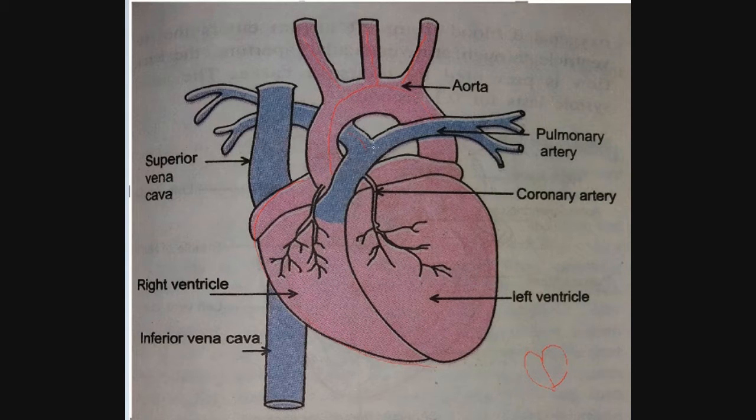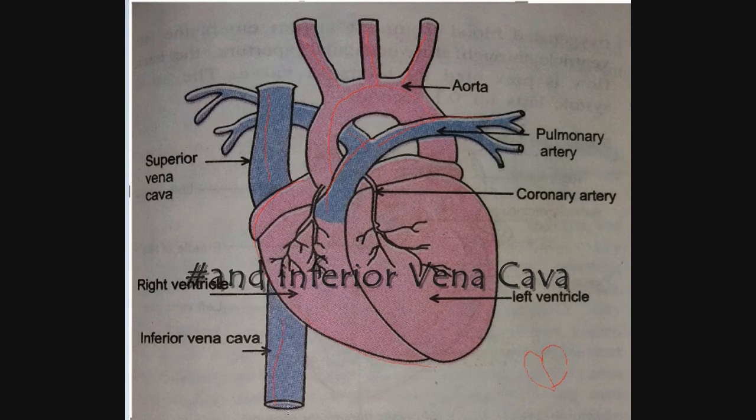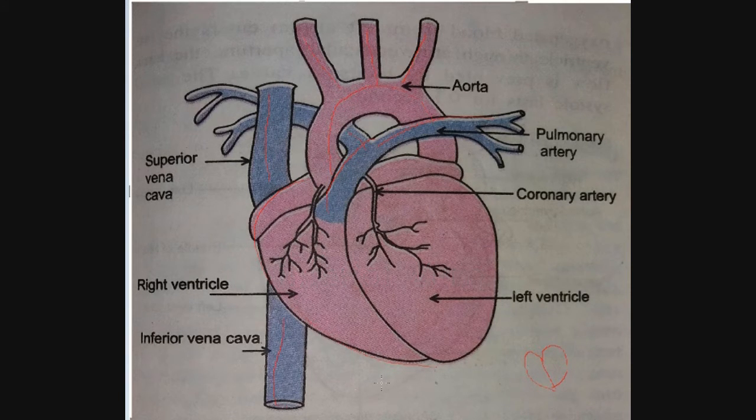It also has this blue-colored pulmonary artery which goes from below the aorta, so we will draw these branches here, and also these coronary arteries, small arteries at the last.